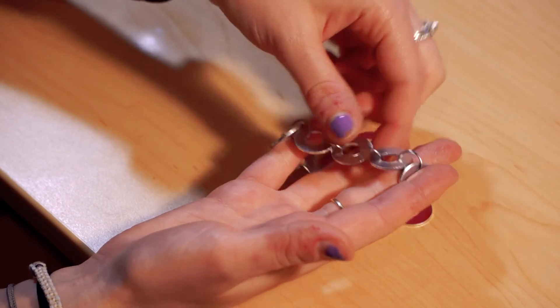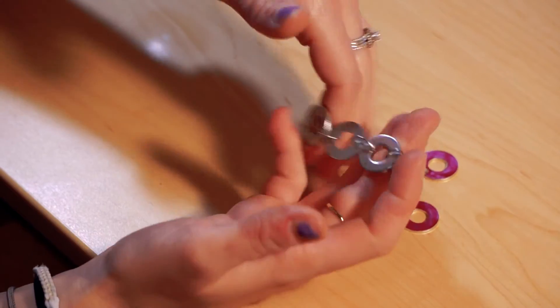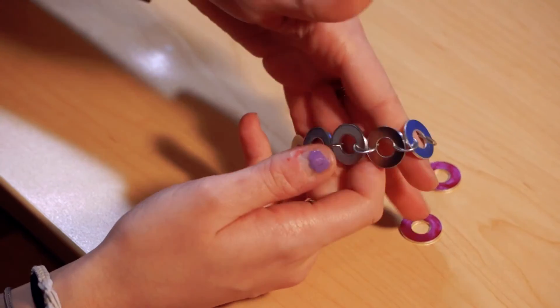The good thing about this project is you can do kind of what you want with it. You can alter the design in ways that you think would be creative. So that was just a really quick tutorial on how to make a washer bracelet. I'm Katie Merrick. Thank you for watching.